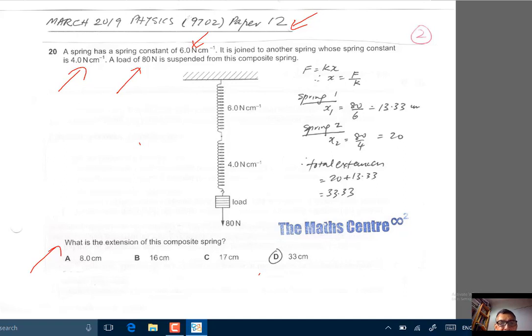What we have here is a spring system which is connected in series. Now, when you have a series connection like this, this 80 Newton that is applied here is experienced by this spring and this spring. What that means is, this spring here will experience 80 Newton and this spring here will experience 80 Newton.